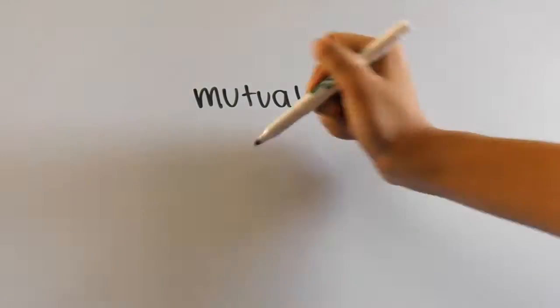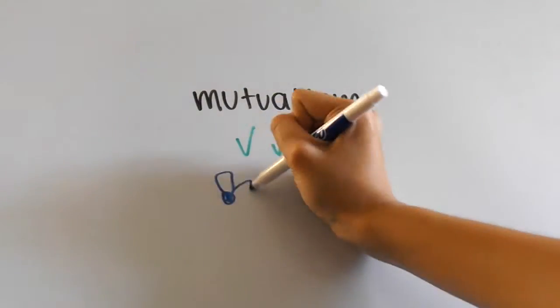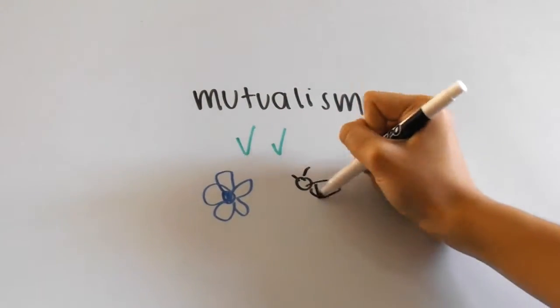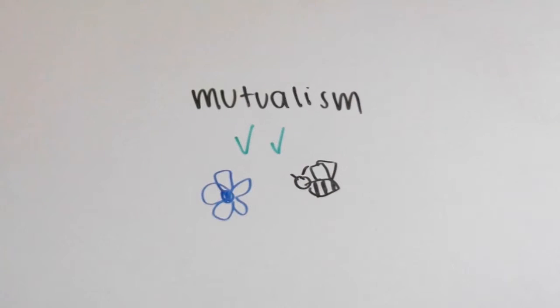Mutualism is when both of the organisms gain benefits from the symbiotic relationship. Think of a flower and a bee. When bees gather nectar from flowers, they're basically gathering nutrients.